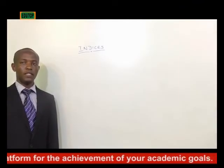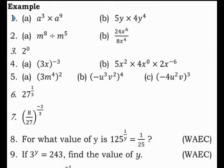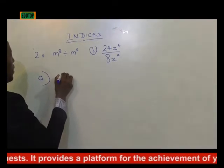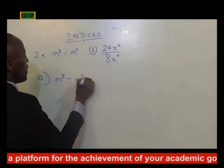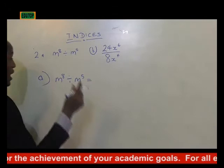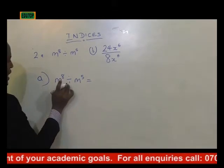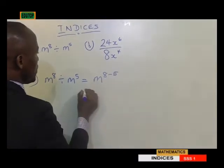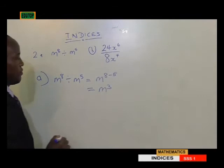The second law of indices — example 2a is m raised to power 8 divided by m raised to power 5. When dividing, we subtract the powers, so that would be m raised to power 8 minus 5, which equals m raised to power 3.